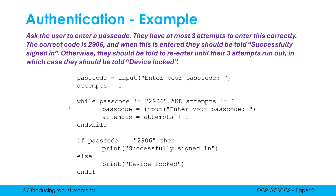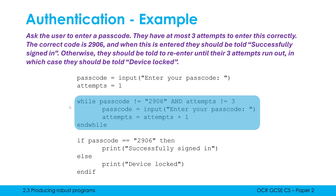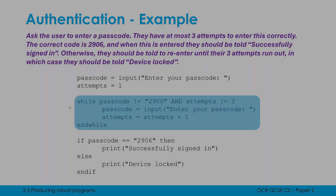If they got it correct we say they're signed in successfully, otherwise we lock the device. Like validation, we always do authentication early — we put it right at the top because we don't want the user to progress into our program unless they are the correct person. We are assuming that if they get the passcode or password correct, they are the person we are expecting.